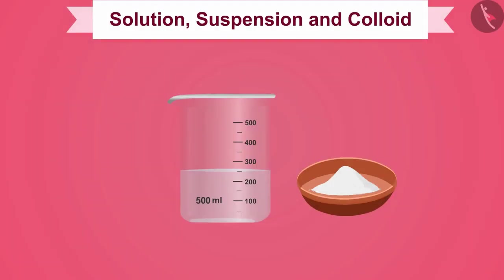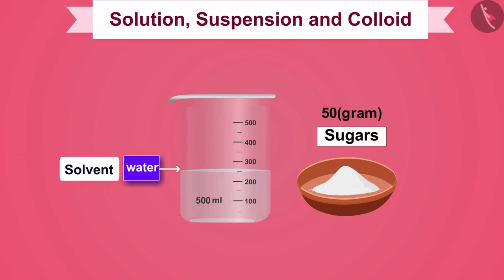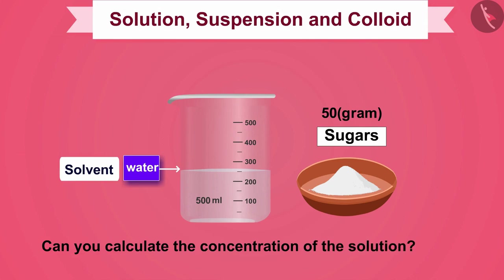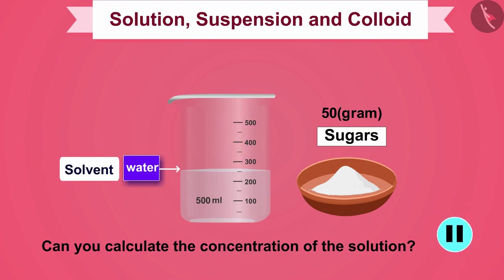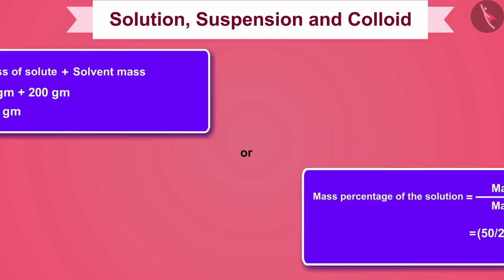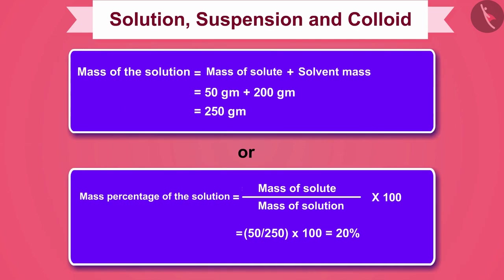For example, if 50 grams of sugar is dissolved in 200 grams of water, can you calculate the concentration of the solution? Pause the video and think about the answer, then match your answer. We can solve this question using the concentration formula.